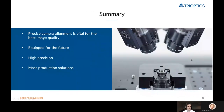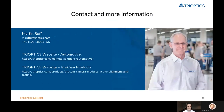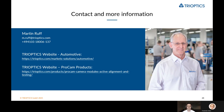In summary, we learned that precise camera alignment is vital for the best image quality. We are equipped for the future: we can offer you high precision, and we can not only do it well, we can also do it fast — and we also offer mass production solutions. If you would like to get in contact with us, feel free to contact our colleague Martin — you can see his contact details on screen — or look at our automotive website or the Prismo products website. Thank you very much.